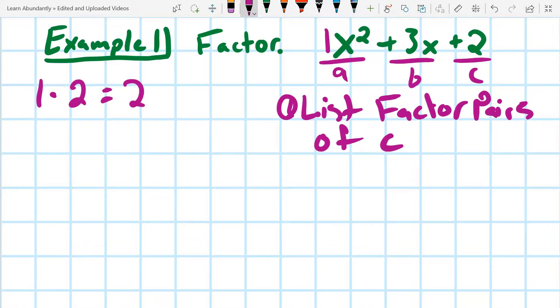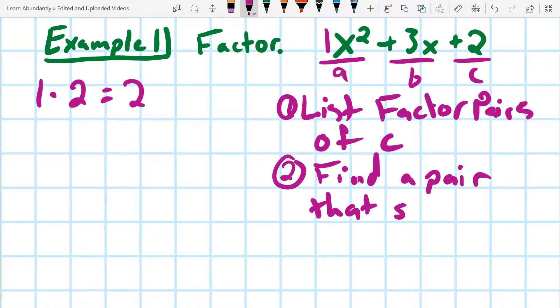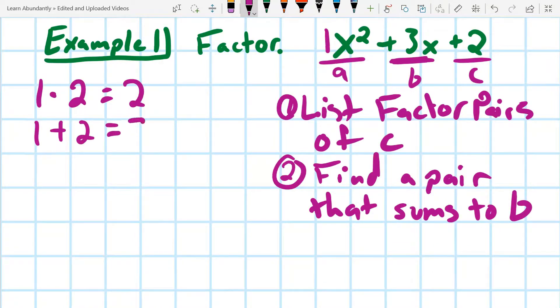So once we list all the numbers, then we're going to, two, we're going to find a pair that sums, that means adds up to, and I'm going to say to b, which means to the middle term. So obviously we have 1 times 2 is 2, and then we know that 1 plus 2 is 3.